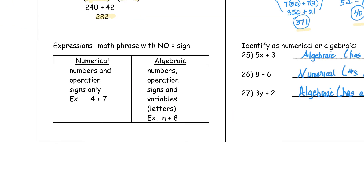Sometimes you will be asked to identify expressions as numerical or algebraic. Remember, if it's numerical, we always think numerical numbers — numbers and operation signs only. For example, 4 plus 7. Algebraic — we think alphabet, and we think of the letters of the alphabet, which are known as variables. The definition tells us there are numbers, operation signs, and variables. So if you see anything with a variable or a letter, automatically it's algebraic.